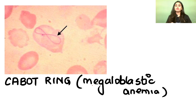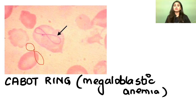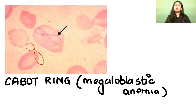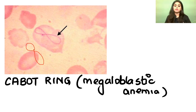Cabot rings — you always study them as figure of eight, but a true/false question could ask whether they can be another shape. Remember: we see figure-of-eight most commonly, but actually Cabot rings can take any shape — B-shaped, round, or other. Most commonly encountered as figure-of-eight, and Cabot rings are seen in megaloblastic anemia.